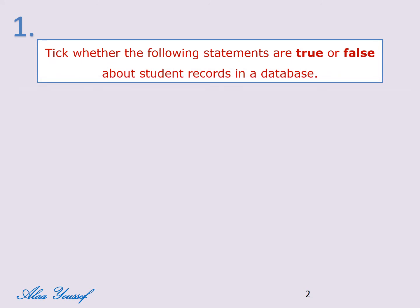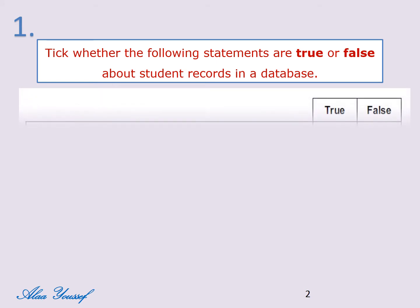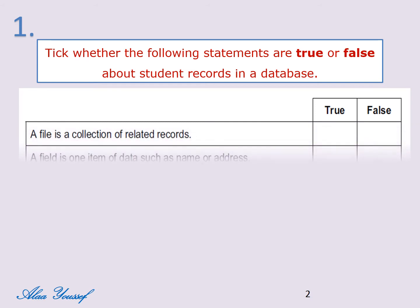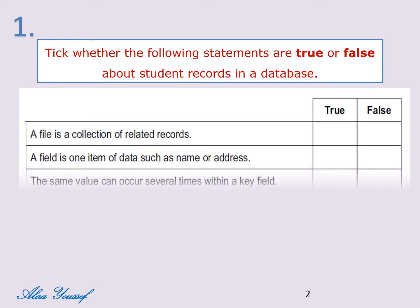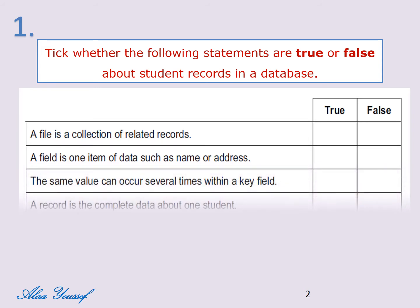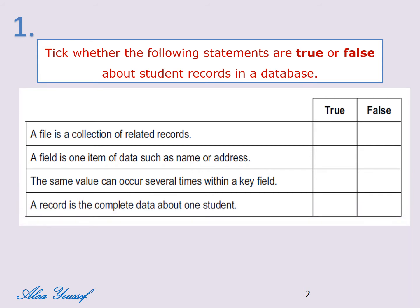Question number one: state whether the following statements are true or false about student records in a database. A file is a collection of related records. A field is one item of data such as name or address. The same value can occur several times within a key field. A record is the complete data about one student.